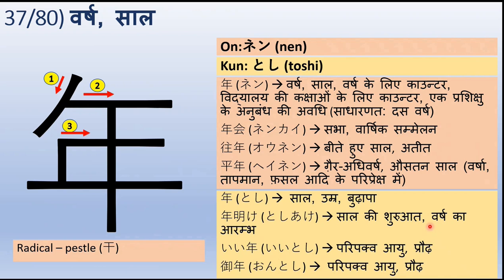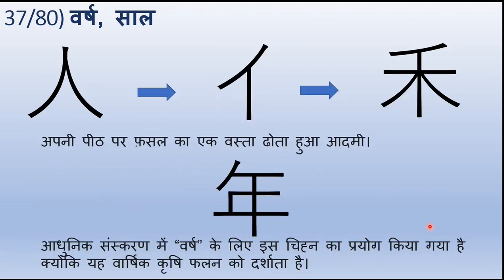Ye dekhi — iska stroke order. Ismein kai saare strokes hain, to dhyan se dekhna zaroori hai — chhe strokes mein ye pura ho jaayega. Aur hum dekhte hain ki is chinha ka vivartan kaise hua. Ye person radical hai, aap ko pata hai, aur ye person radical ka hi variant hai. Aur ye chinha, ye person radical ke saath kaise jura hai aur ye kya darshata hai — apni peet par fasal ka ek basta dhota hua admi — ye hai is chinha ka arth, aur isi chinha se ye evolve hua hai. Ye chinha varsh ko darsha raha hai kyunki adhunik sanskaran mein, varsh ke liye is chinha ka prayog kiya gaya hai, kyunki ye varshik krishi fasal ko darshata hai. Kyunki fasal saal mein ek baar hoti hai, is wajah se is chinha ko is tarah se modify karke saal ko darshaya gaya hai.